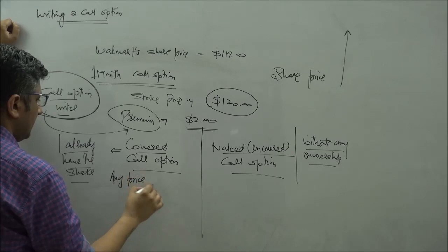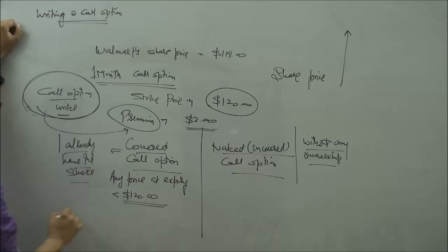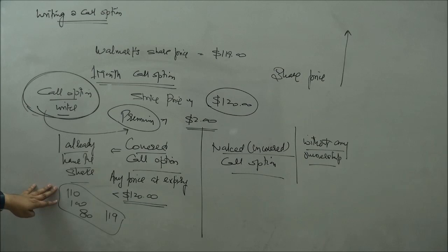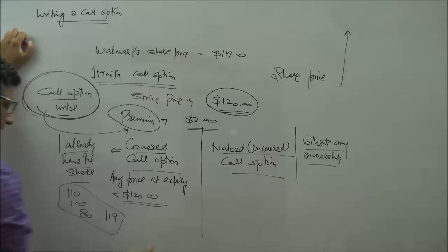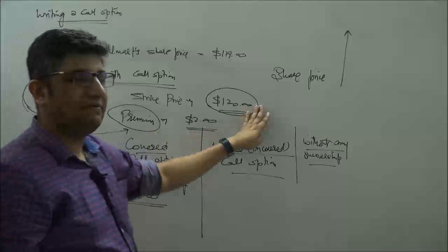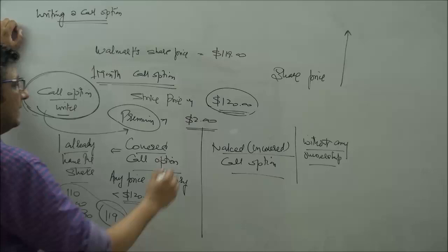Any price is at expiry less than $120 - it could be $110, it could be $100, it could be $80, it could be $119. Quite obvious to consider that the other party, the counterparty will not exercise the option. I mean, put it like this, the market is selling the share at $119. Why would somebody be even willing to buy it for $120? He would rather let the option go, it becomes out of money for him. It means the option lapses. And for me, I receive this premium.